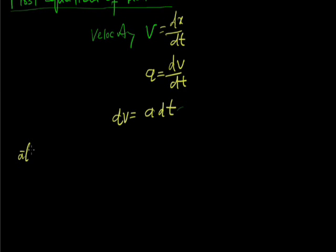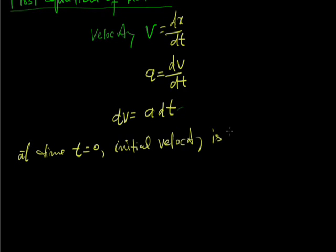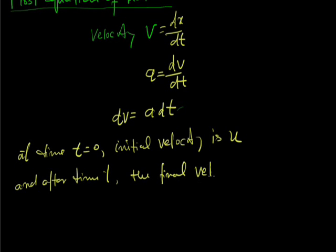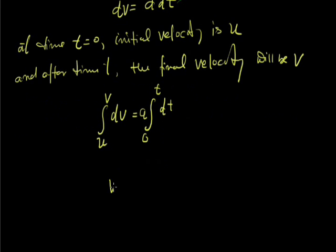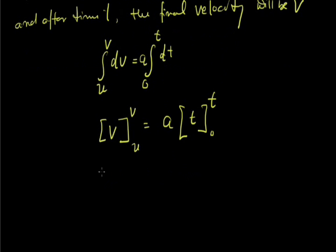At time t equal to 0, initial velocity is u, and after time t, the final velocity is v. Integrating dv equal to a dt with limits: velocity from u to v on the left, and time from 0 to t on the right. Integration of dv gives v from u to v, equal to a times integration of dt which is t from 0 to t.